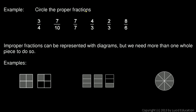And in this example, we're told to circle the proper fractions. So we would just circle all the ones where the number on top is smaller than the number on the bottom. So 3 is smaller than 4. 7 is smaller than 10.